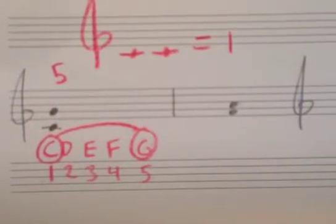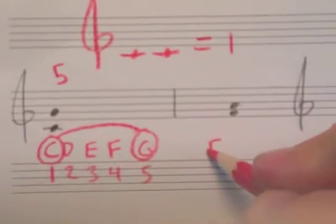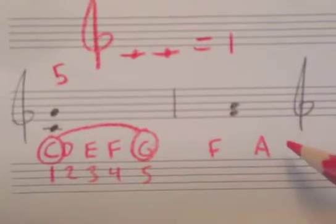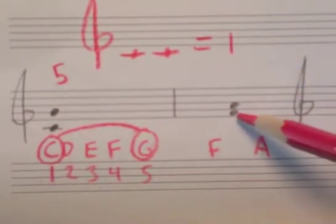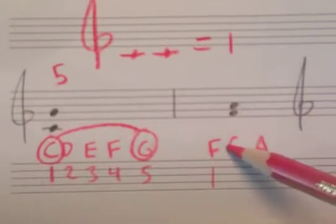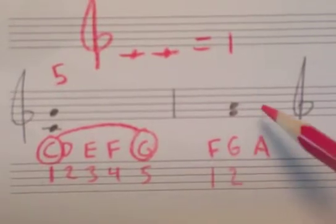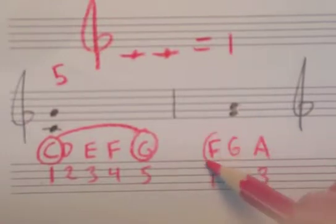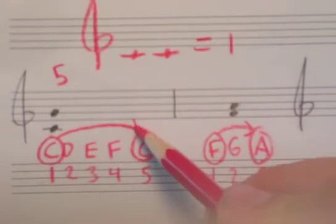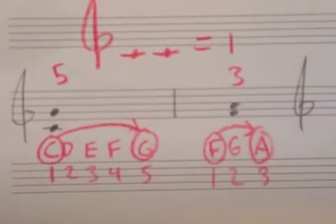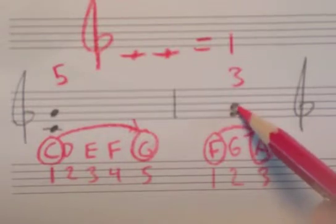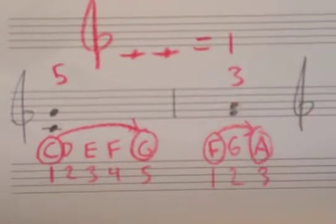Let's go to the next example. Here we have F and we have A. So we can count up the musical alphabet. F is 1, G is 2, A is 3. So from F to A is some sort of third. Or we can count space, line, space - 1, 2, 3.